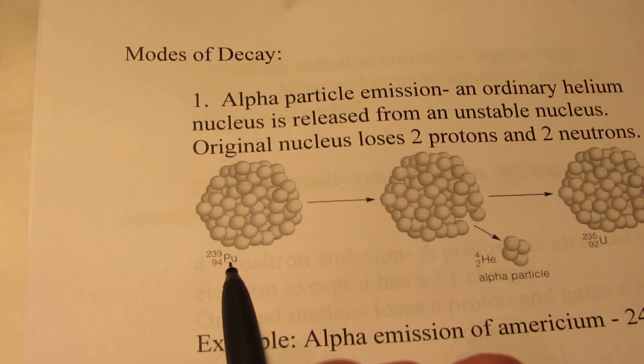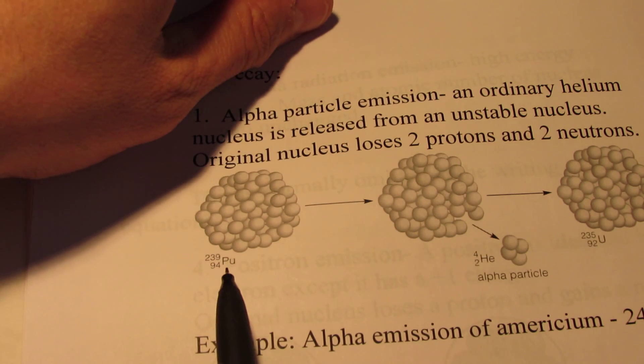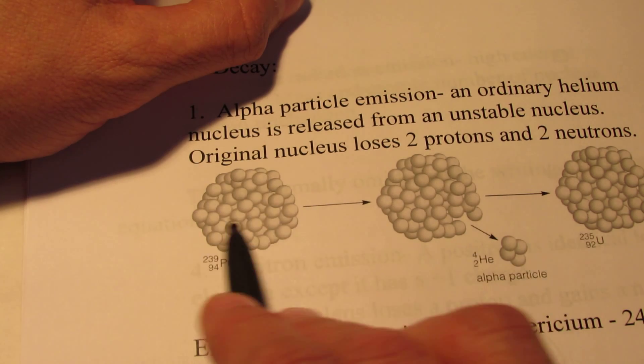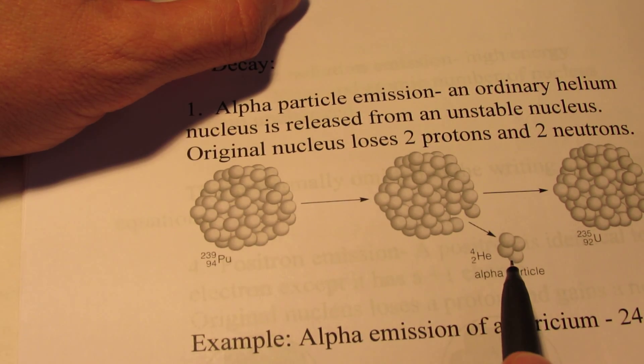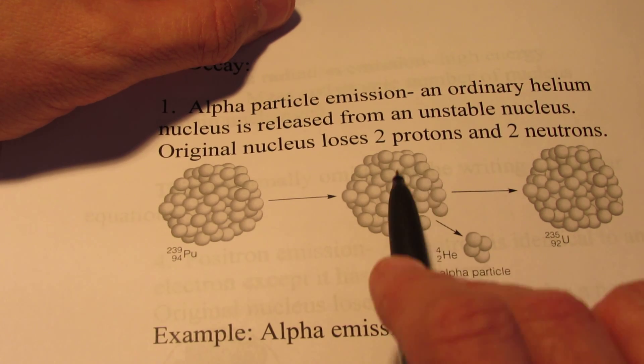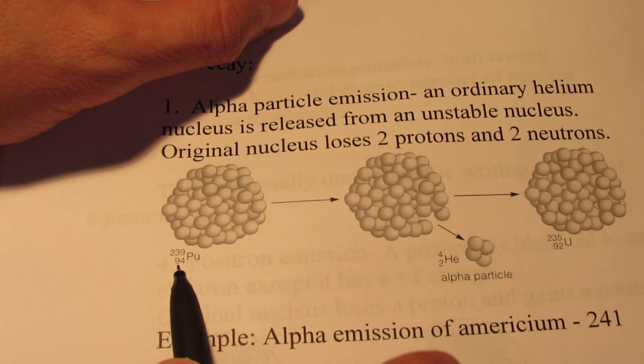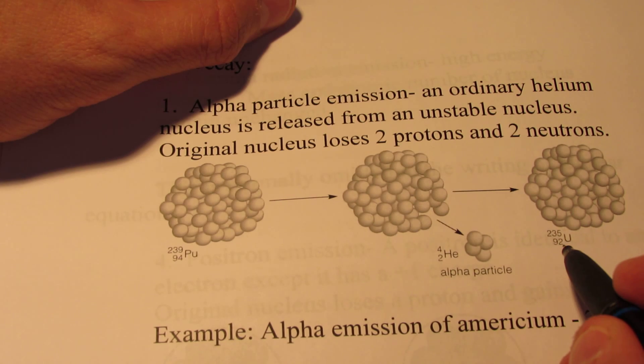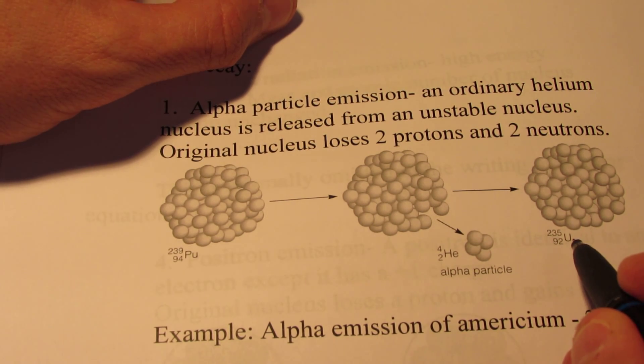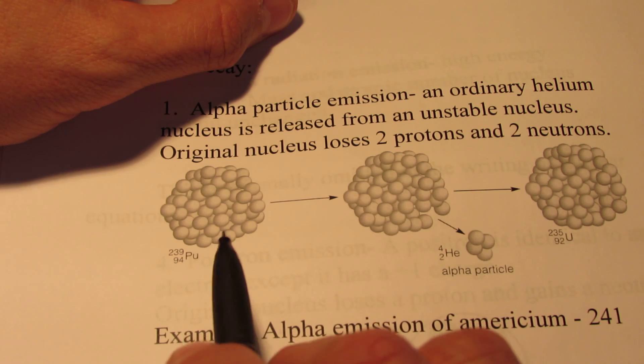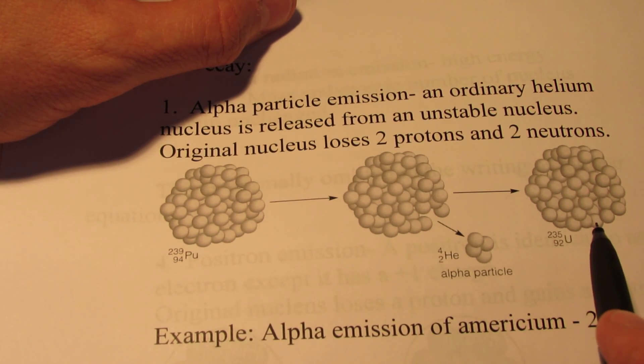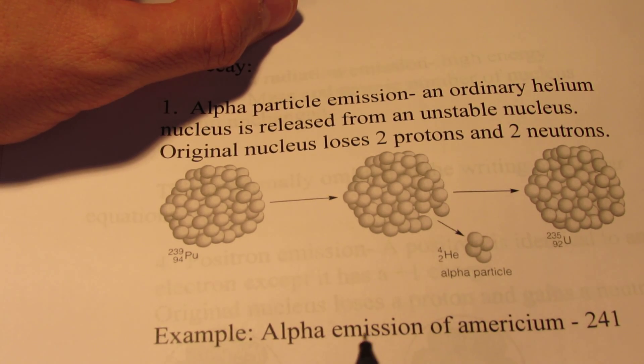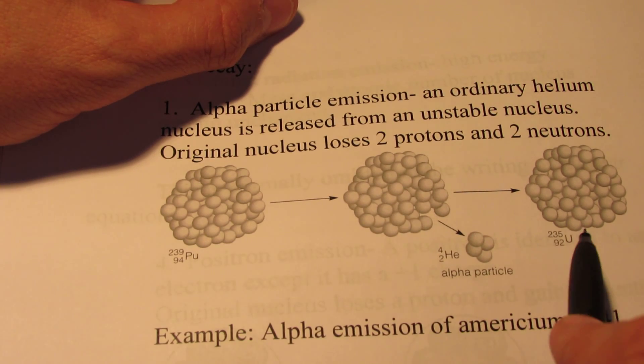Now plutonium-239 is an example of an atom that will eject an alpha particle. In an attempt to stabilize itself, this nucleus will eject two protons and two neutrons. That's going to change the makeup of the nucleus. Instead of having 94 protons like plutonium did, it will now only have 92 protons. And the element with atomic number 92 is uranium. So we have actually transmutated an atom of plutonium into an atom of uranium, which is not an ordinary chemical reaction. These are nuclear processes.